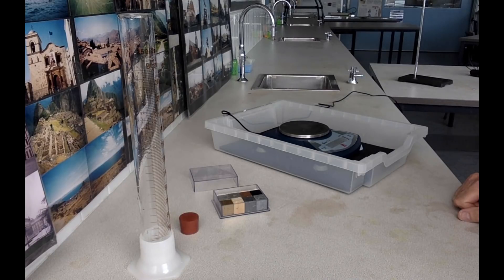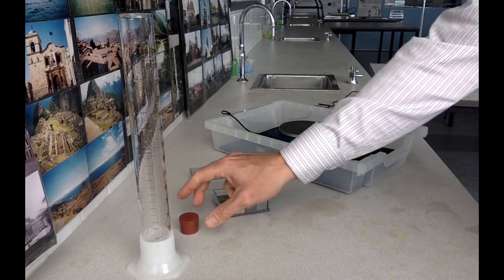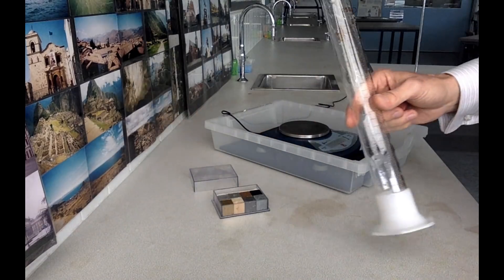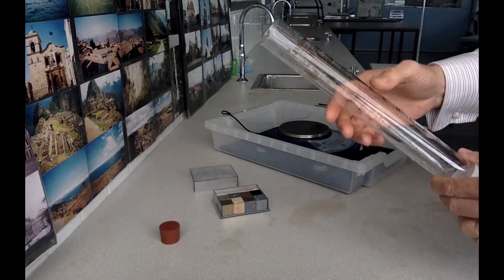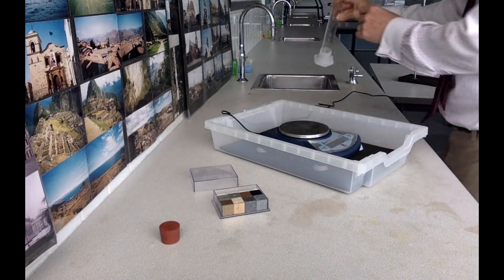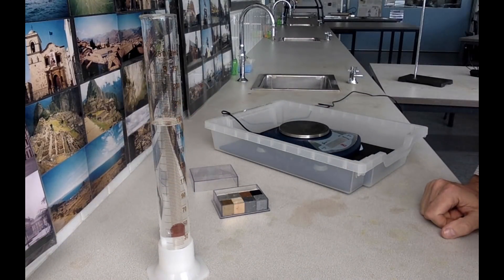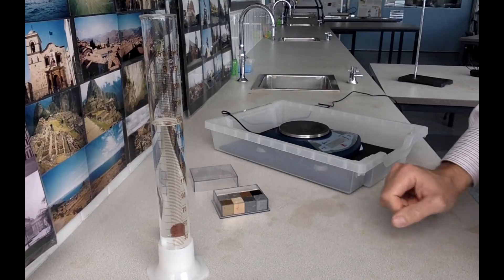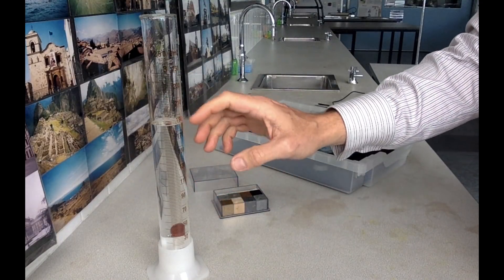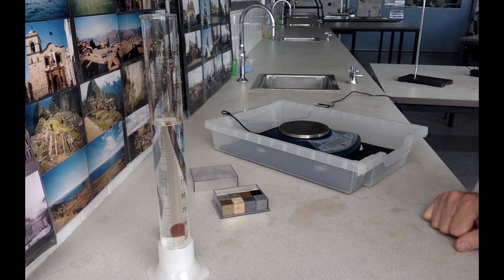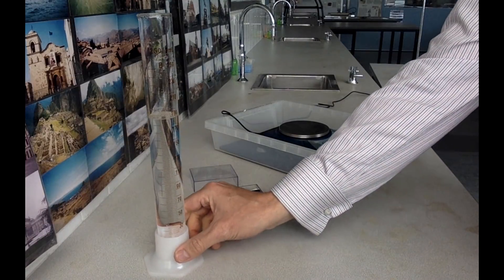The first thing we need to do is fill our measuring cylinder with about 200 ml of water. That doesn't have to be accurately done, but you do want around 200 ml. The more water you have in it, the less of a splash you're going to have when you drop your metal cube into the measuring cylinder.